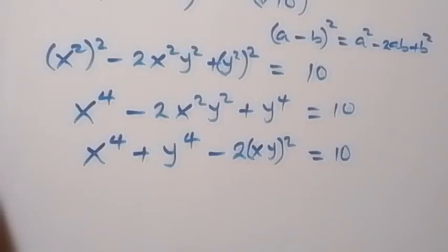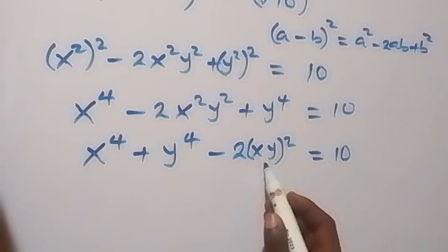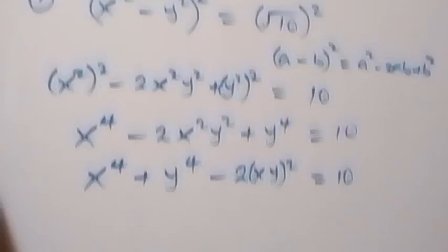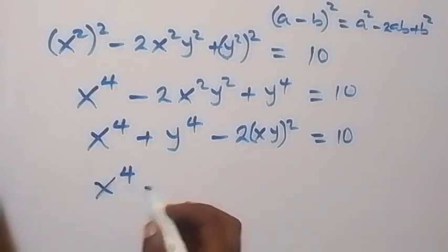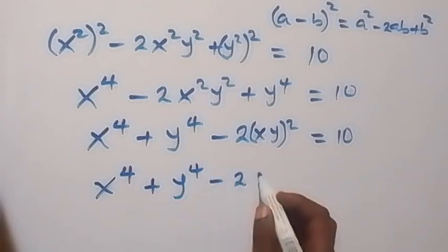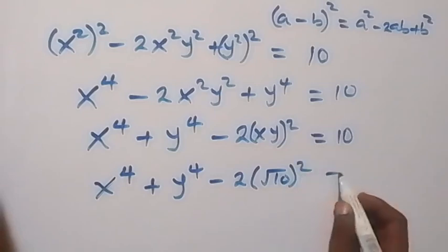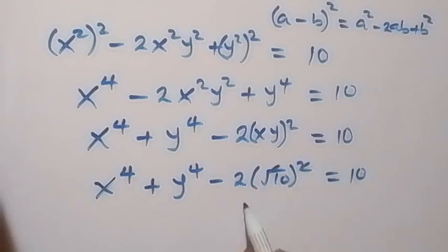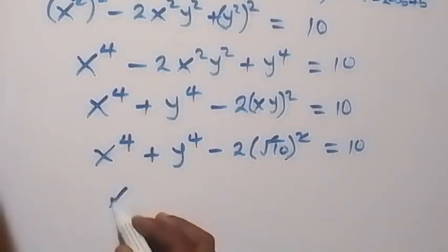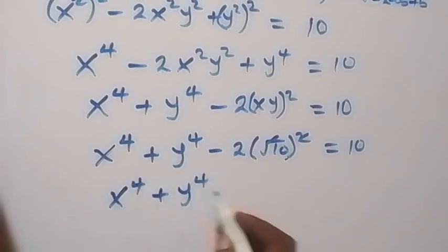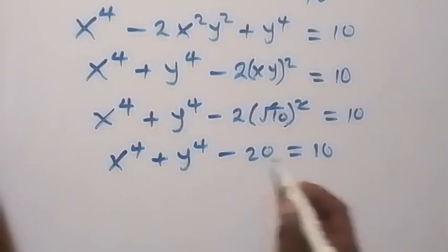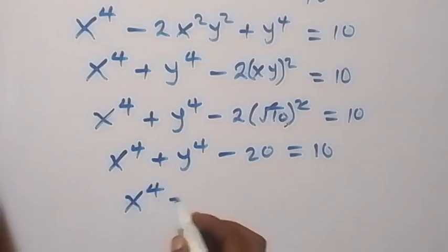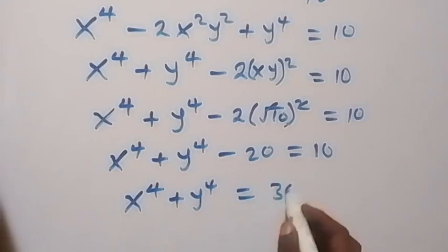The next step is to substitute from equation 2, where xy equals root 10. Substituting xy as root 10, we get x to the power 4 plus y to the power 4 minus 2 times root 10 squared equals 10. The square cancels the square root, leaving 10, so 2 times 10 is 20. Taking minus 20 to the other side gives x to the power 4 plus y to the power 4 equals 30. Label this as equation 3.